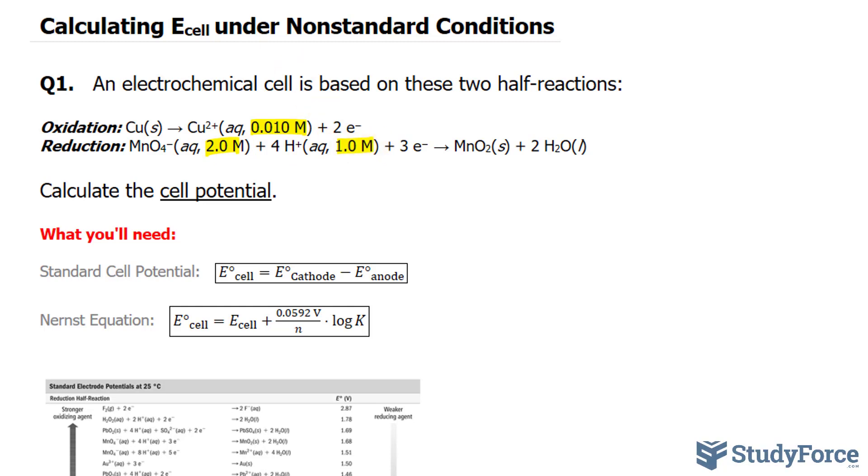What we want to do is combine these two half-reactions together to get a complete reaction representing this electrochemical cell. And the way we do that is by making sure that the electrons, those found here and those found here in the reduction reaction, are the same. Right now it's at 2 and 3. We can make them the same by multiplying this whole thing by 3 and multiplying this whole thing by 2.